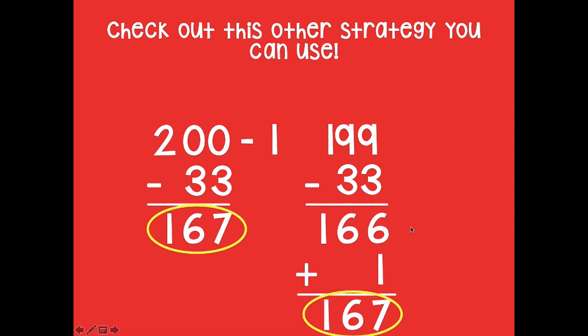Because if you don't, you're going to be left with 166, which is off by 1. So just make sure if you use this strategy, subtract 1 at the beginning and add 1 at the end, and you'll be able to rock it. Okay, so just another strategy. Not one you have to use, just another option.